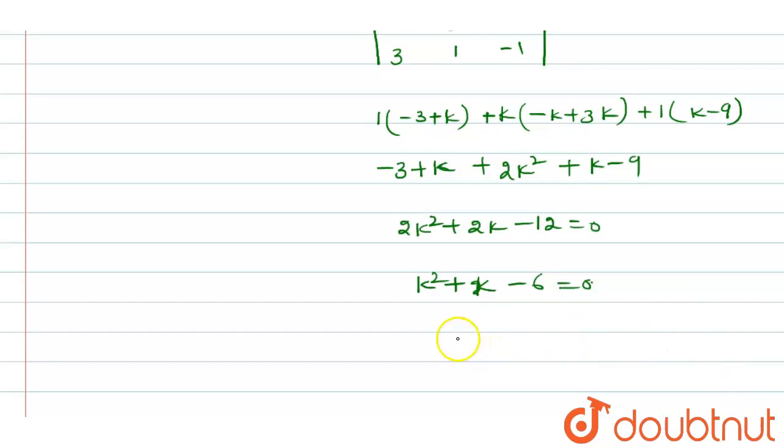K square plus 3k minus 2k minus 6 equals 0. Take k as common: k into k plus 3, minus 2 into k plus 3 equals 0.